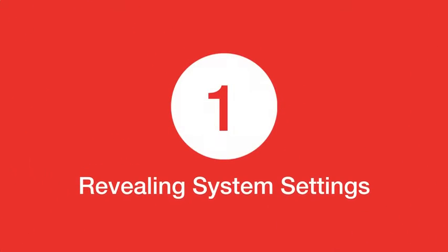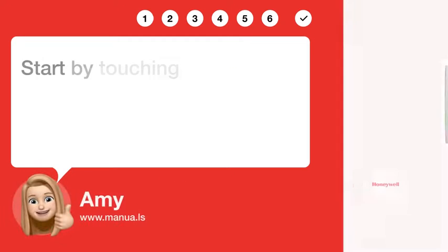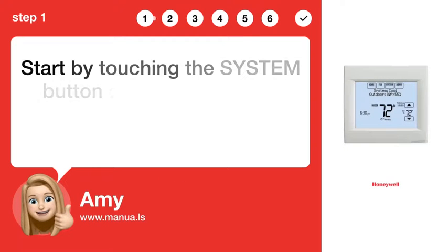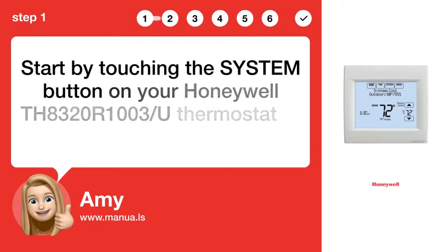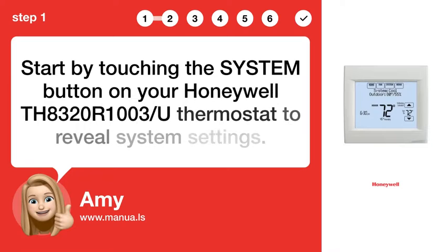Step 1: Revealing System Settings. Start by touching the SYSTEM button on your Honeywell TH8320R1003/U thermostat to reveal system settings.